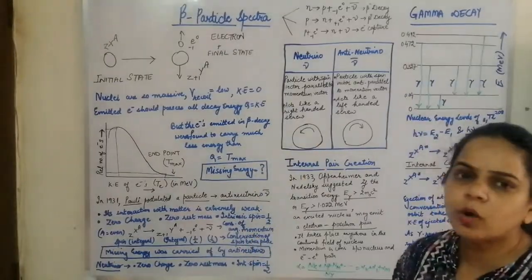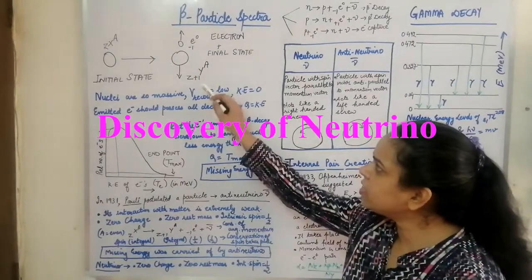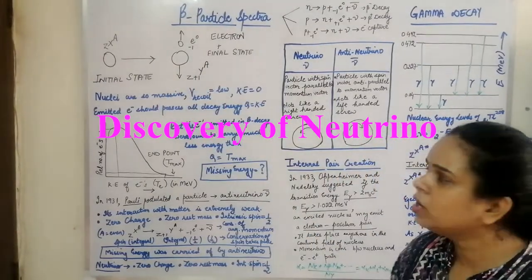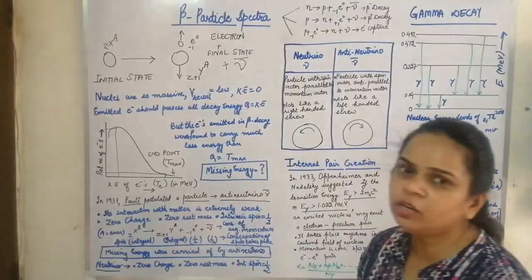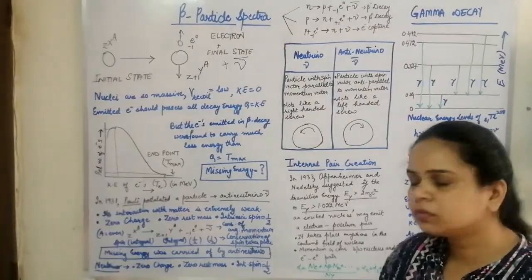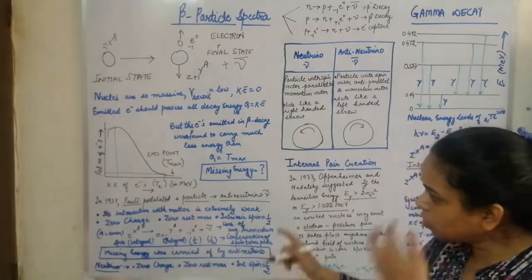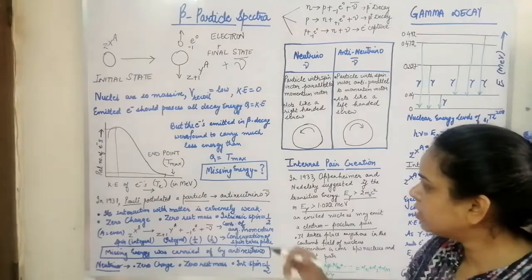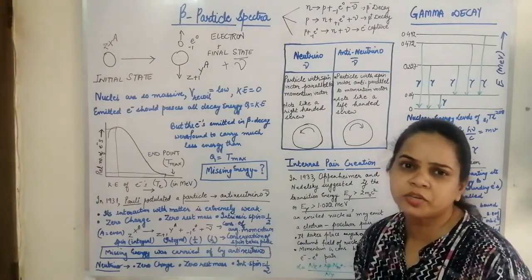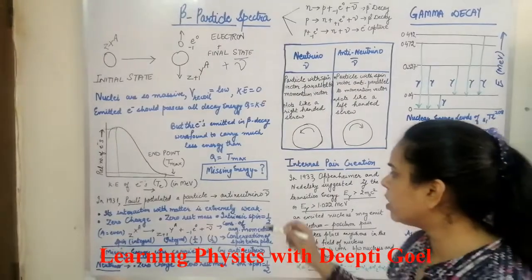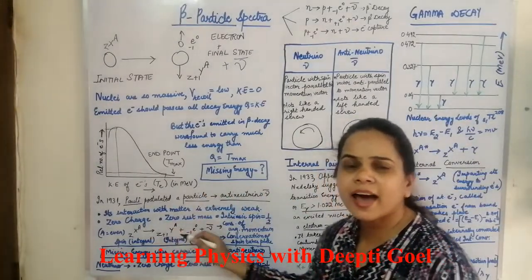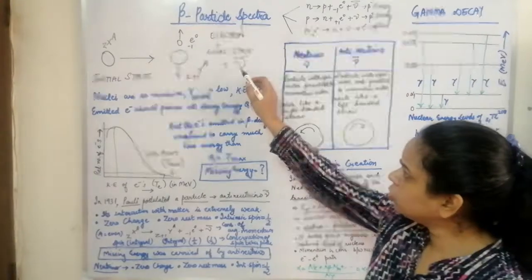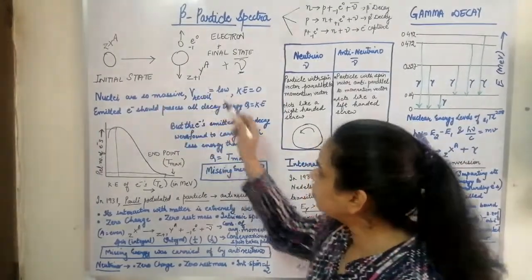In 1931, Pauli proposed that the parent nucleus not only disintegrates into a daughter nucleus and an electron, but an additional particle called the anti-neutrino is also emitted. He suggested that this anti-neutrino particle has extremely low interaction with matter — essentially no interaction. Its properties are: zero charge, zero rest mass, and an intrinsic spin of half-integral.